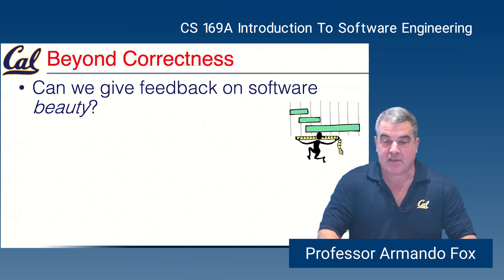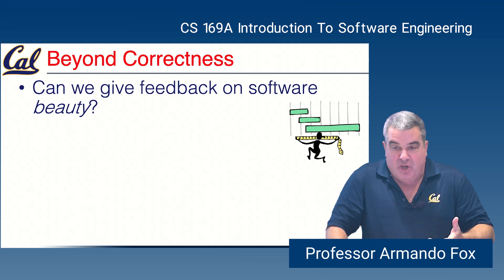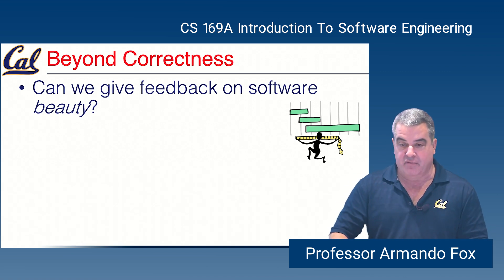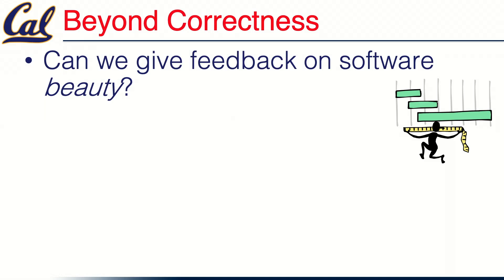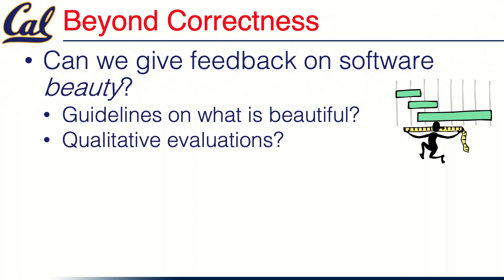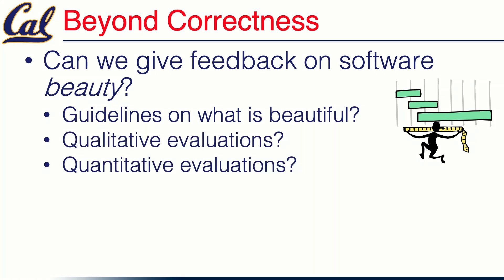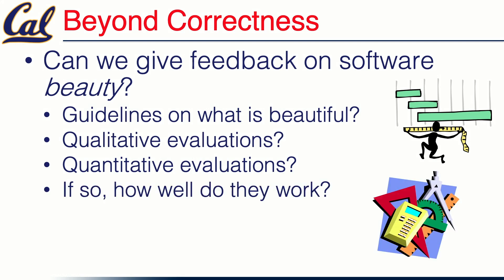We might reasonably ask: how do we know if we're succeeding at that? What kind of feedback can we give on how maintainable or how beautiful code is? Are there guidelines — either quantitative or qualitative — that would tell us when we need to improve a piece of code, and how useful are they in practice? Let's talk about each kind: qualitative things about code and things you can measure quantitatively.